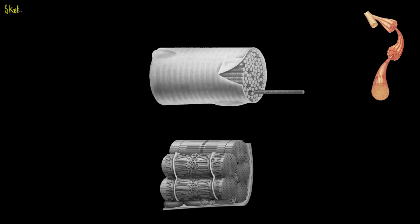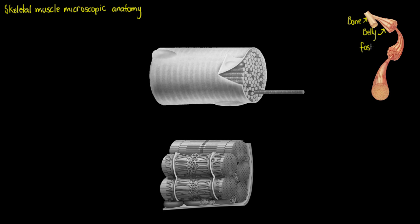Welcome to this tutorial on the anatomy of skeletal muscle. We've already covered the gross anatomy in a previous video, so this time we're going to take a look deeper and microscopically. As a quick recap, our muscle comes off the bone through a tendon into the belly or body of the muscle, which is subdivided into fascicles, and then further into individual muscle fibres.